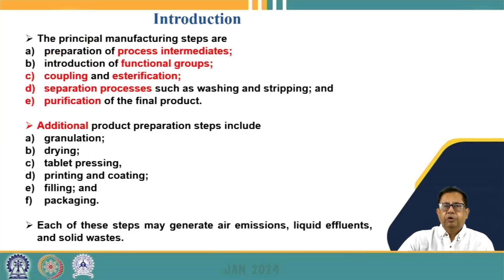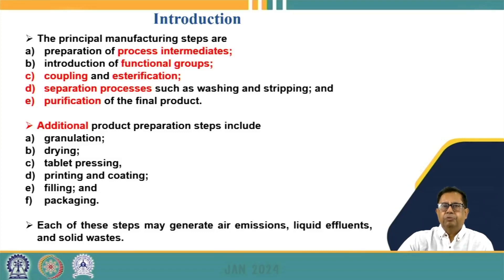Manufacturing processes involve the preparation of process intermediates — raw materials must be converted to the final pharmaceutical product, requiring a number of intermediate chemicals. A number of functional groups must also be introduced during the chemical synthesis process, which leads to the formation of the synthetic drugs.